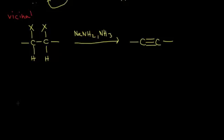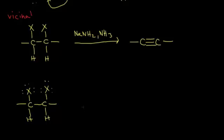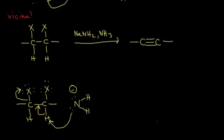Let's look at the mechanism starting with our vicinal dihalide. We put in the lone pairs of electrons on our halogens and we have a hydrogen on each carbon. The amide anion once again functions as a strong base — it takes a proton, the electrons move in to form a double bond, and at the same time the electrons kick off onto our halogen. That's our first E2 elimination reaction.